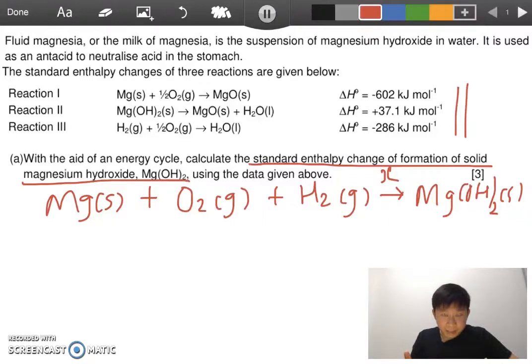Now we try to piece in the other reactions into this. Look at the first one first: magnesium plus half oxygen gives you magnesium oxide. You can see that we can draw the arrow down for the first equation to get you magnesium oxide solid.